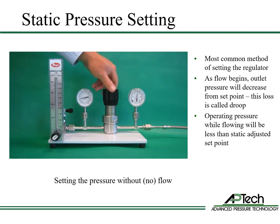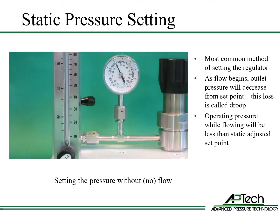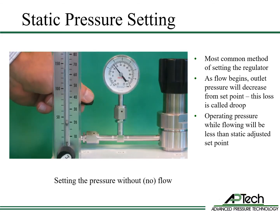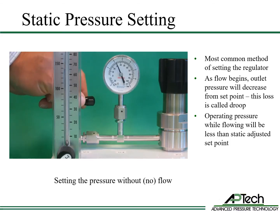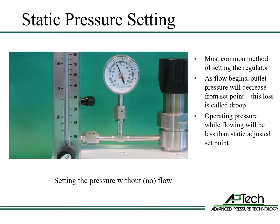Now we'll demonstrate two methods to set the outlet pressure. The most common method is static pressure setting, which means setting the pressure regulator with no flow. As flow begins, outlet pressure drops compared to the set point due to droop. When flow stops, the outlet pressure will rise slightly above set point due to creep or lockup. This is normal and will be explained in detail in later training.